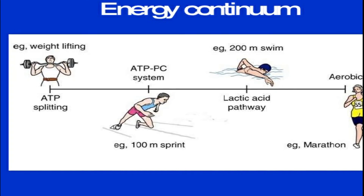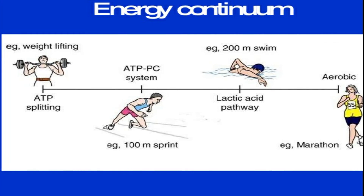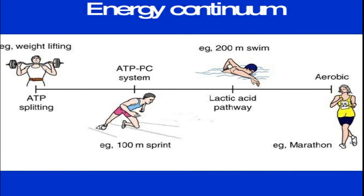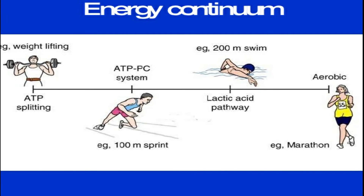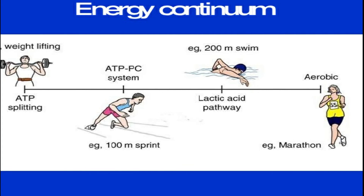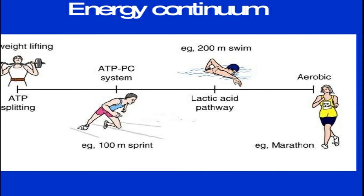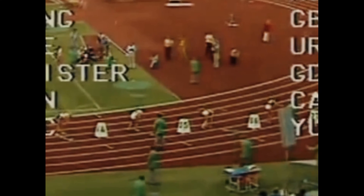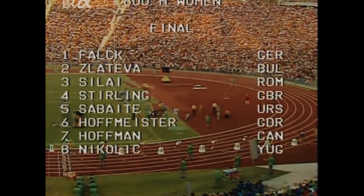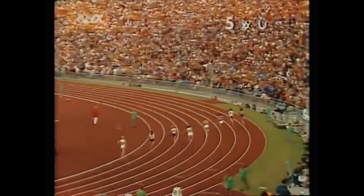Most sports and physical activities use these energy systems. Though there are times when one energy system dominates during a specific type of physical activity, it is important to understand that all energy systems are active. Intensity and duration will decide which energy system is used. Often, there will be a combination of all three. Here is an example wherein all three energy systems are in use, but in varying degrees. In the start of the race, the ATP-PC system is used.